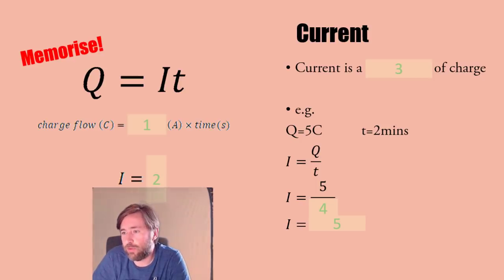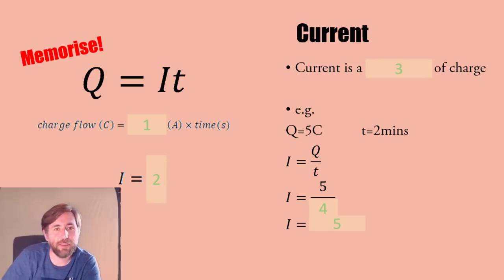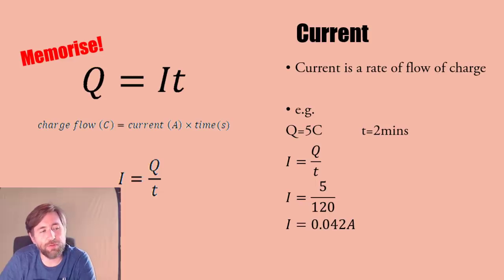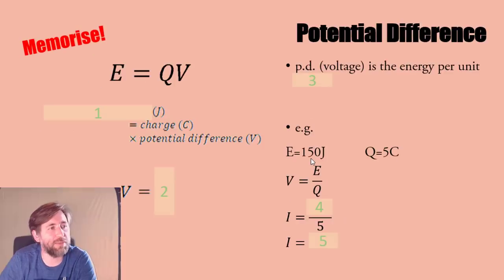Current - now we're onto the electricity bit. Remember this as charge flow is current times time. Current is therefore a rate of flow of charge. Here's a little example calculation: charge flow divided by time, five coulombs in two minutes. It's not two minutes, it's 120 seconds. Make sure you use time in seconds. It comes to 0.042 amps. Make sure you can round to a specific number of significant figures - here we've got two sig figs.